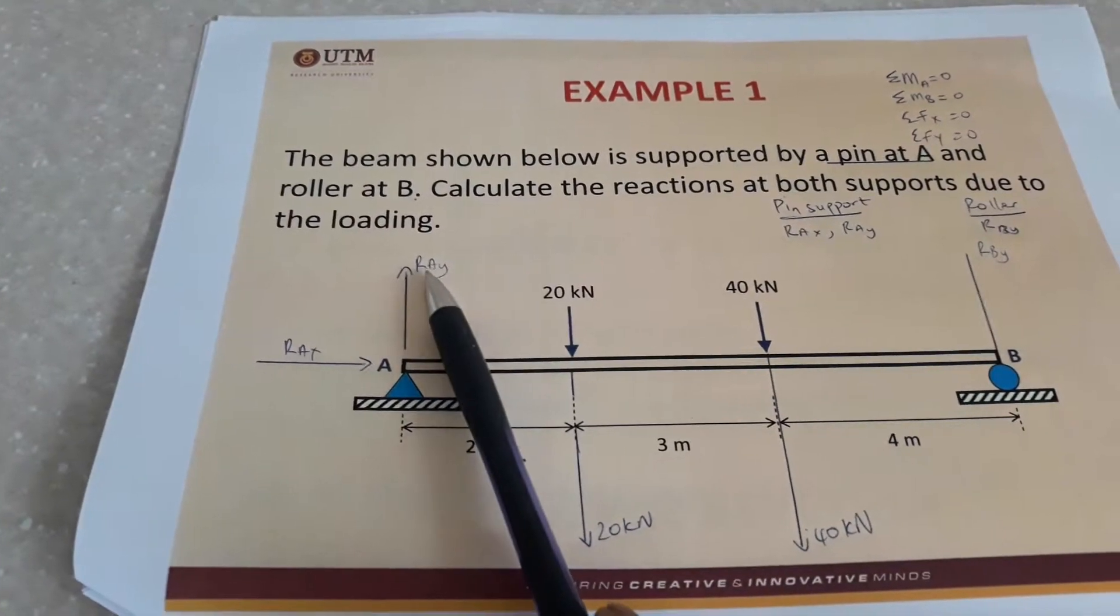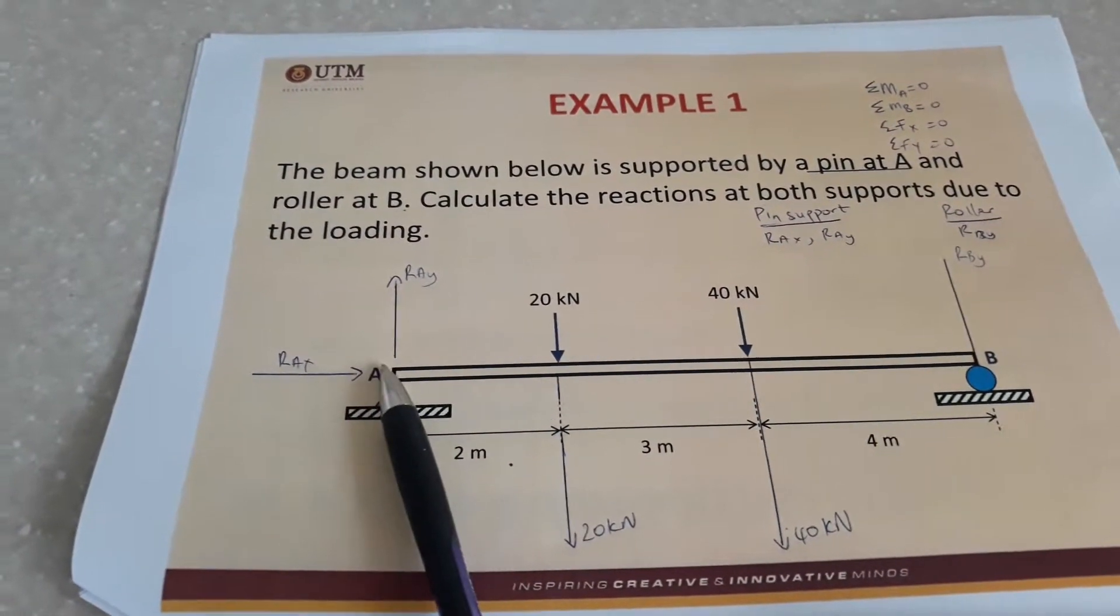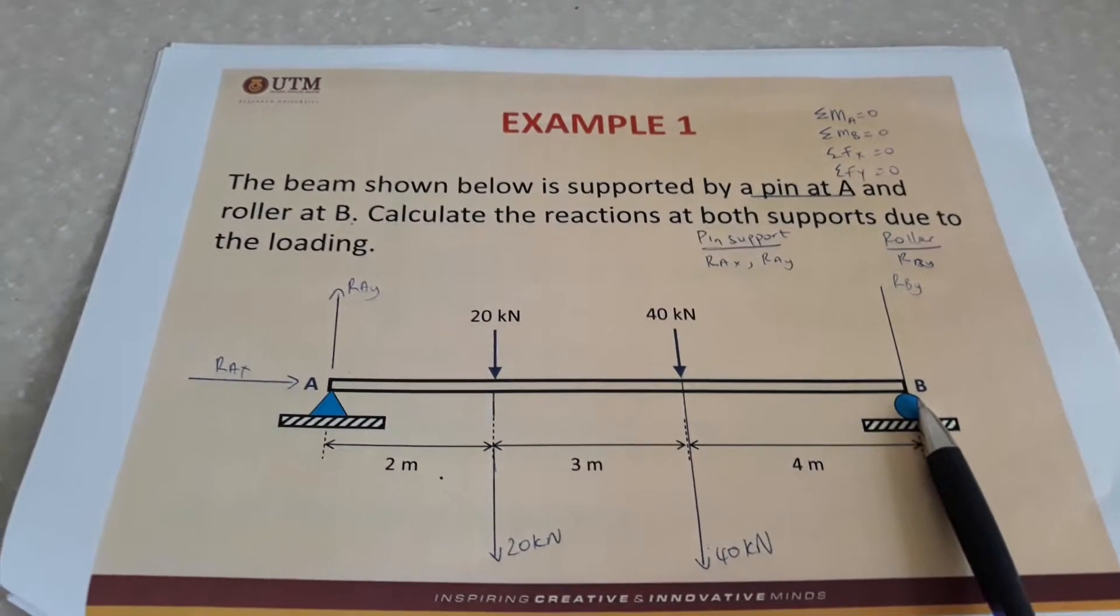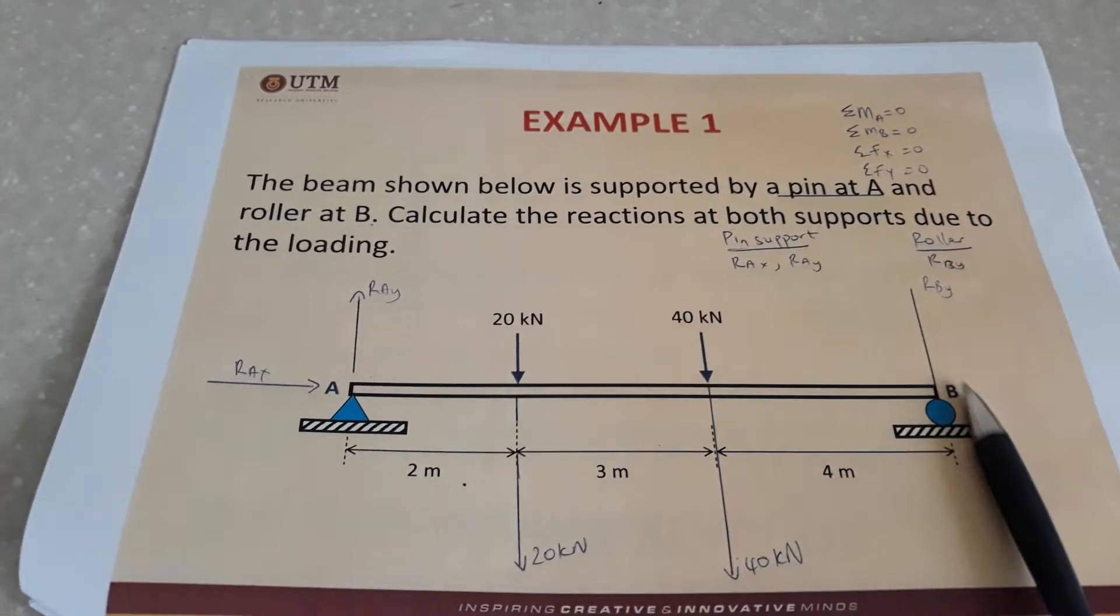So for a pin support you have reaction in the y direction and reaction in the x direction. For roller support it only transmits load in one direction, so you only have reaction in the y direction.